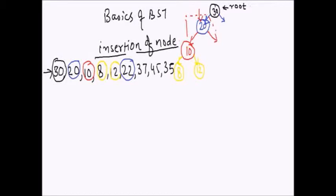Now the next element to be inserted is 22. We go down to 30 — is 30 greater than 22? Yes, so we move left. Now we compare 22 with 20 — is 22 greater than 20? Yes, that means 22 has to be on the right side of 20. Is there any node on the right side of 20? No. So we add 22 and associate the right hand side pointer of 20 to 22.